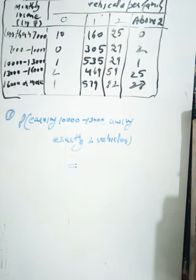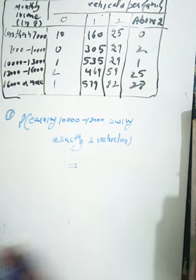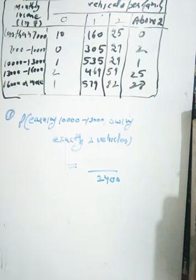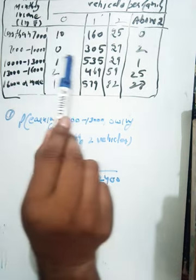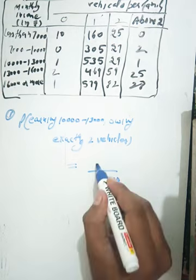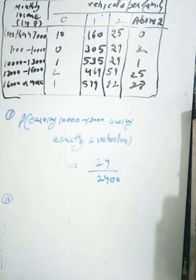We need families earning 10,000 to 13,000 with exactly two vehicles only. The total number of families is 2,400, so total cases are 2,400. For exactly two vehicles in that income range, we have 29 families. So the answer is 29 over 2,400.